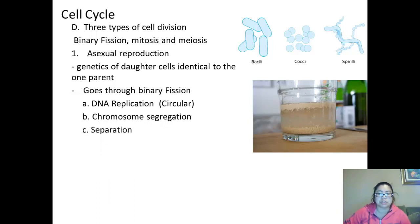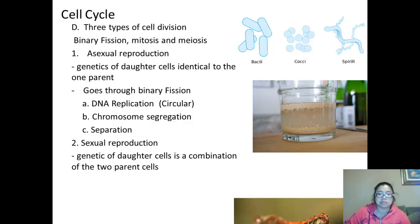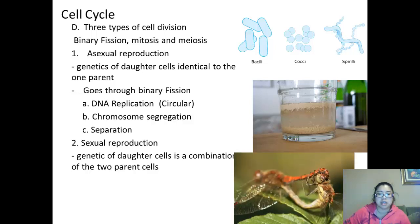In sexual reproduction, which requires another mate, the genetic of the daughter cells is a combination of the two parent cells. Here we have two mating dragonflies as an example of sexual reproduction. And because these species are more complex, they have a larger genome, so they have multiple chromosomes. Quite different than in asexual reproduction, where their genome's much smaller in a circular form.